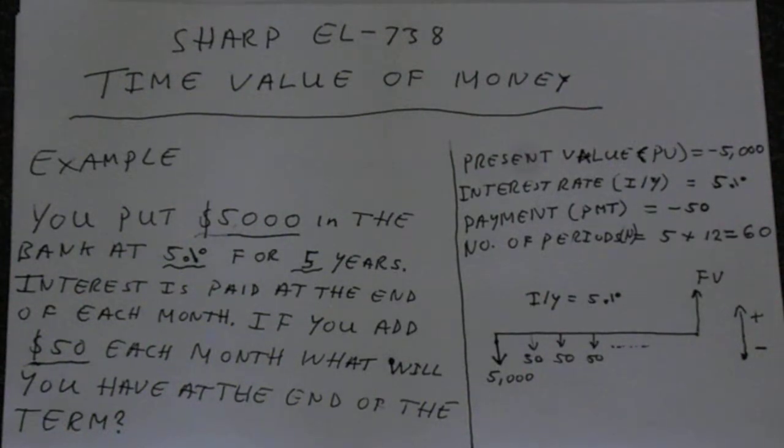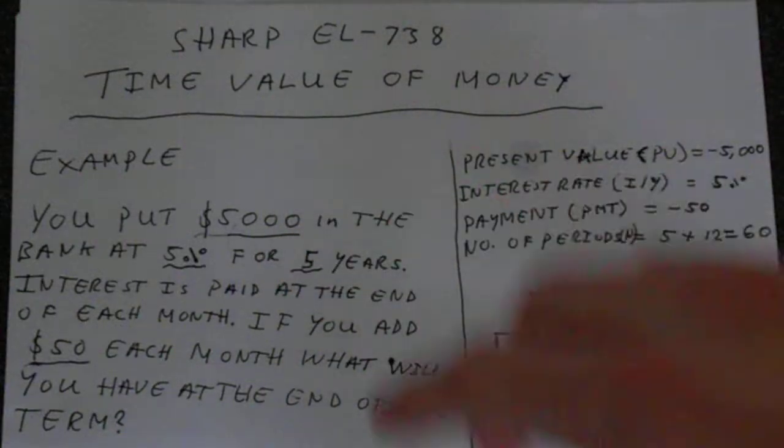So first step, of course, is to extract the values and put them in a language that the calculator understands. You put these into the memories and do the computations. So the present value is your $5,000. That's what it's worth now.